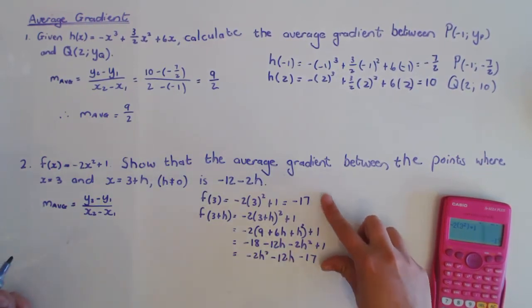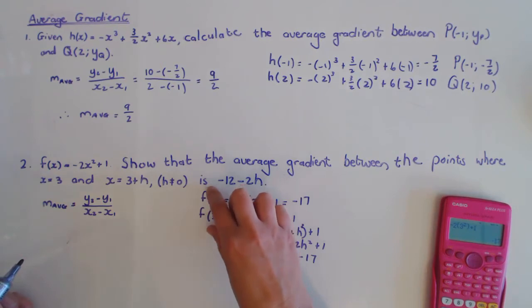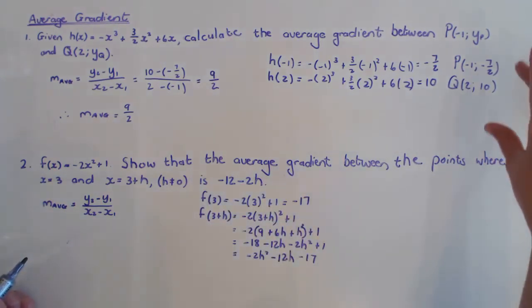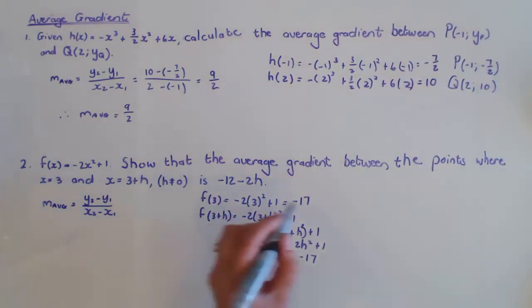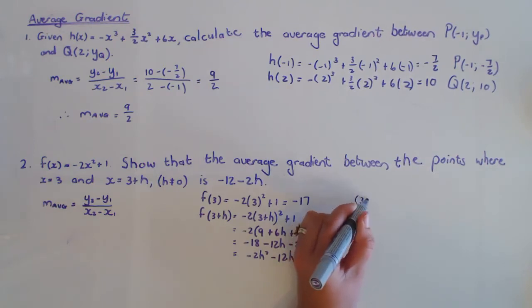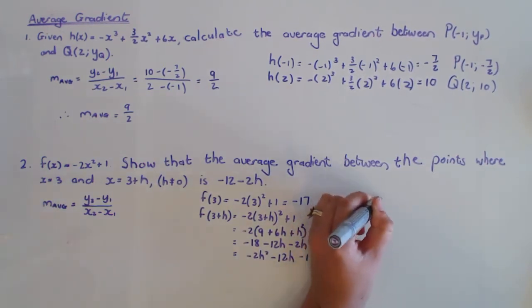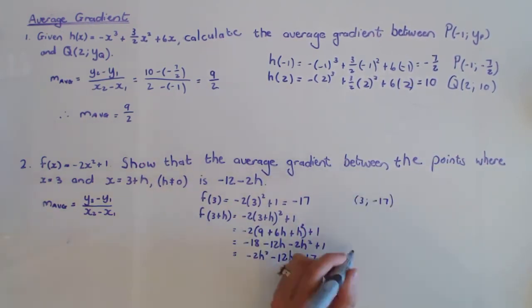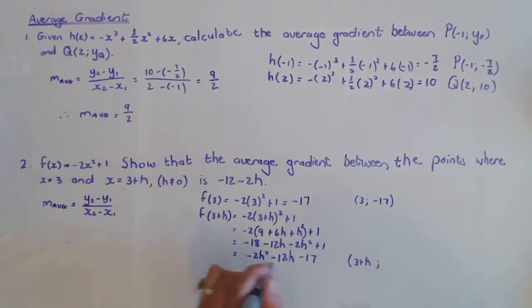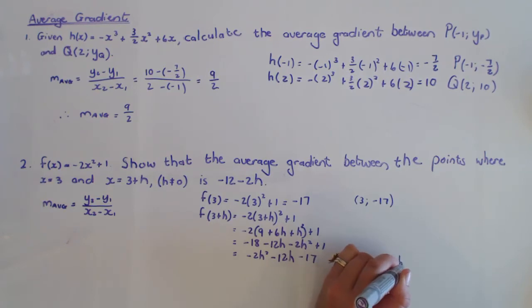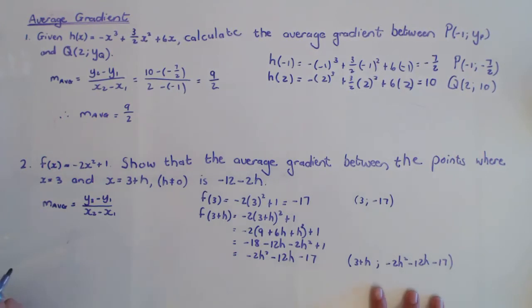So these are my y values that correspond with these x values. If I can just put it in the same perspective as that question, where x is 3, I have the y value -17, and where x is 3 + h, I have the y value -2h² - 12h - 17.